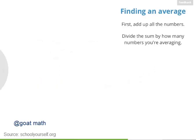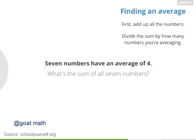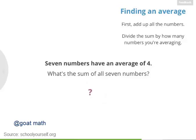Let's try a few challenging questions involving averages. Say I have seven numbers and I tell you their average is 4. Can you figure out what the sum of these seven numbers must be? Whatever the sum might be, dividing it by 7 will give you the average, which is 4. So what number divided by 7 equals 4? The answer is 28.